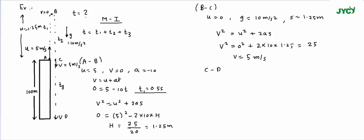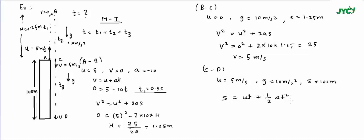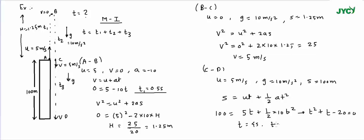For part C to D, the initial velocity is 5 meter per second downward, acceleration is 10 meter per second square downward, and the displacement is 100 meter (height of building). Since velocity, acceleration, and displacement are all in the same direction, using s = ut + ½at²: 100 = 5t + ½ × 10 × t², giving 5t² + t − 20 = 0. Wait — rearranging: t² + t − 20 = 0... solving the quadratic gives T3 = 4 seconds or t = −5 seconds.